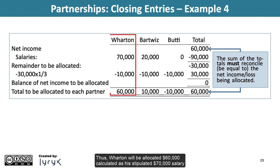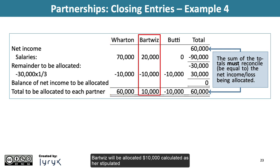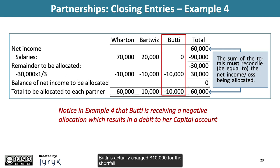Thus, Wharton will be allocated $60,000, calculated as his stipulated $70,000 salary less $10,000 — one-third of the shortfall — and credited to his capital account. Bartwiz will be allocated $10,000, calculated as her stipulated $20,000 salary less $10,000, her one-third share of the shortfall. Beauty is actually charged $10,000 for the shortfall and essentially has to contribute to cover the stipulated salaries of Wharton and Bartwiz.